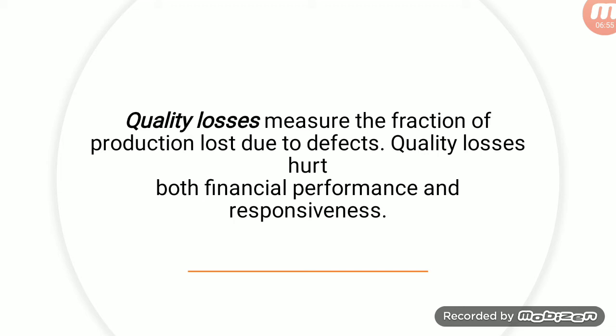Next is the metric of quality losses. When production is made and there is a defect, at that same time production stops and quality control is done. For example, if one product is defective then production will stop, rework will be done, and time and cost are incurred. After the final product is made, if there is still a defect it will be scrapped or reworked. In both cases cost is incurred, which affects financial performance and responsiveness.